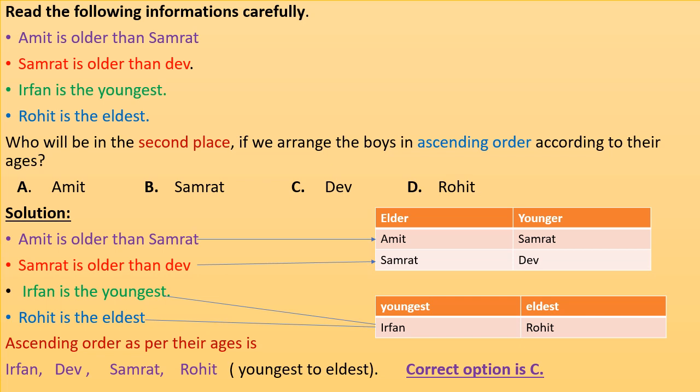Read the following information carefully. Amit is older than Samrat. Samrat is older than Dev. Irfan is the youngest. Rohit is the eldest. Who will be in the second place if we arrange the boys in ascending order according to their ages?